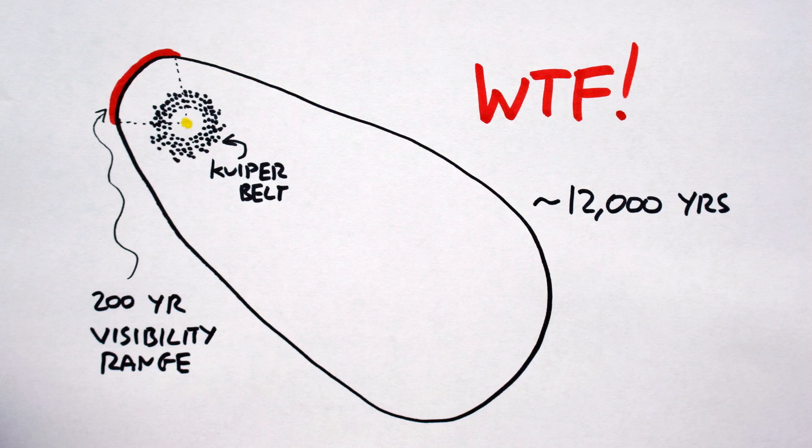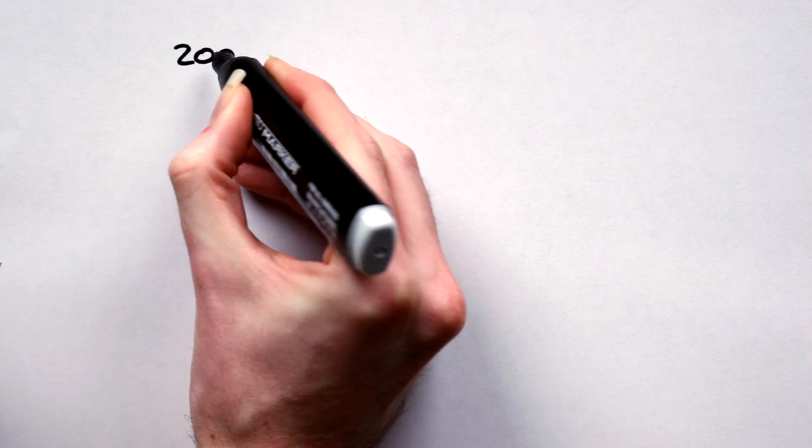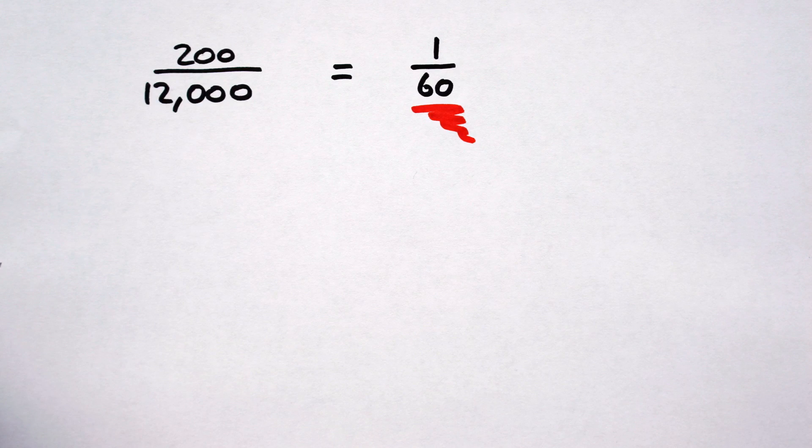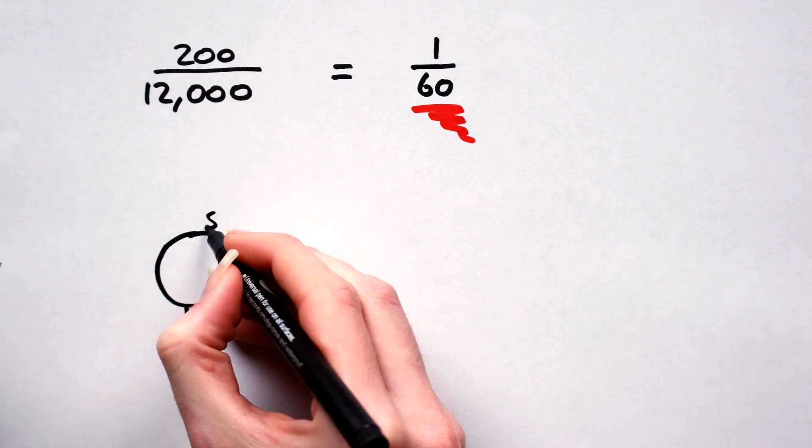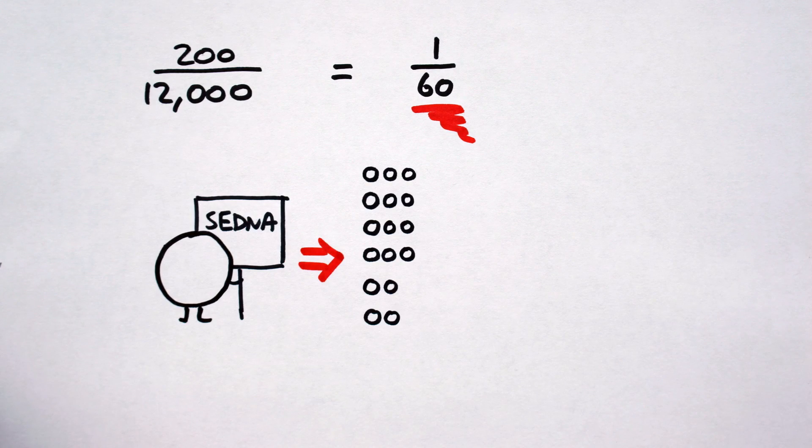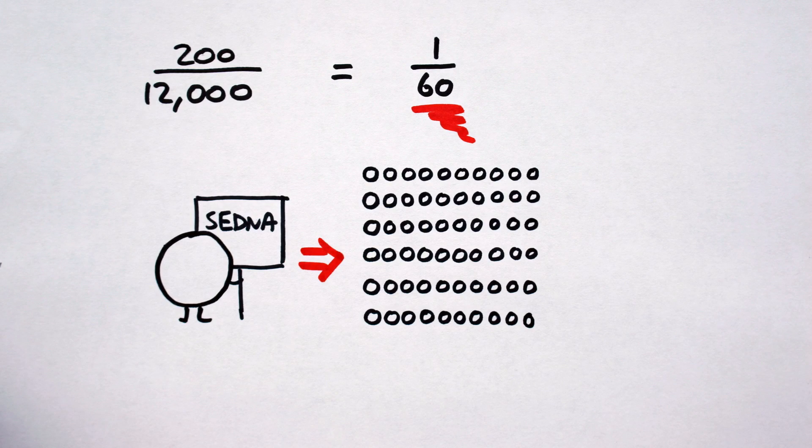So seeing as we did spot it, we must have been insanely lucky, right? Well, maybe, but scientists don't like thinking in terms of luck. Instead, they viewed it as if we had a 1 in 60 chance of spotting Sedna. Or put another way, for every one Sedna we find, 60 may go undiscovered.